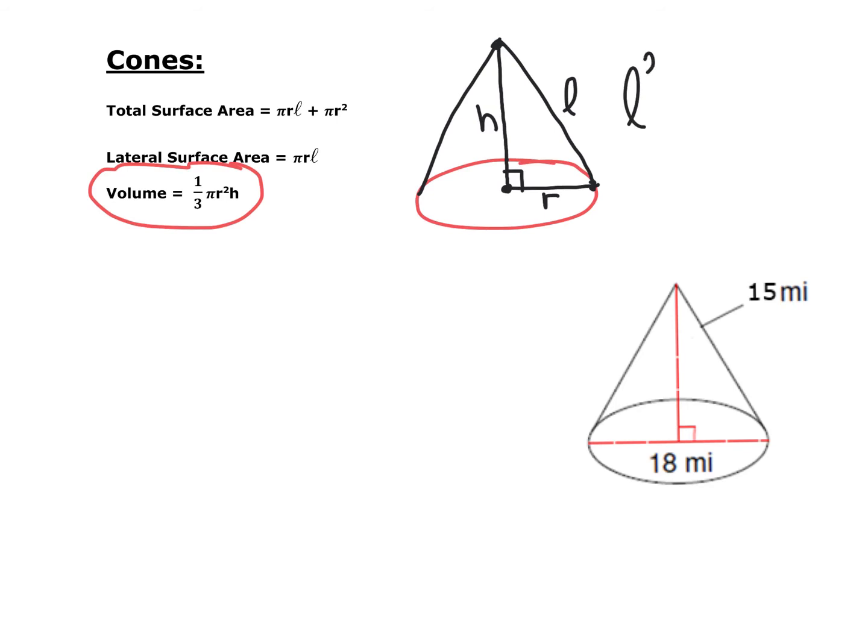We have to keep that in mind because we may not be given the height but we would be given some of the other information. We can find the height or the radius. So let's look at this example. We have a cone and we want to find the volume. It's one-third pi r squared times the height.